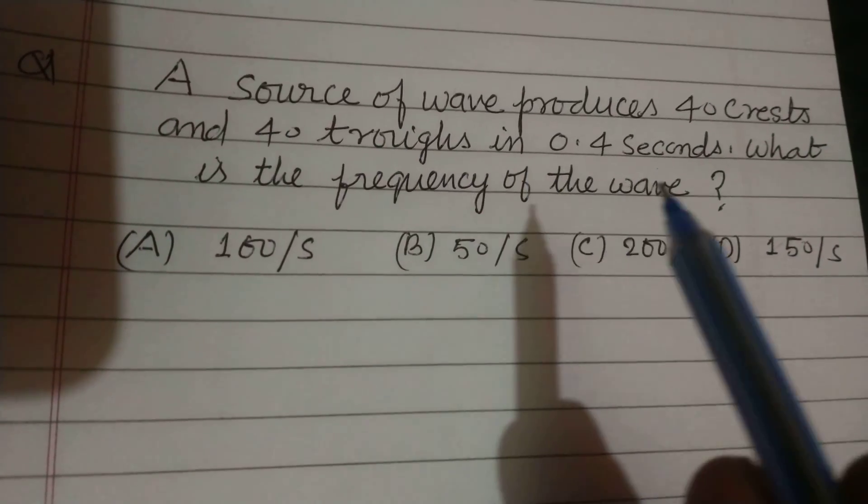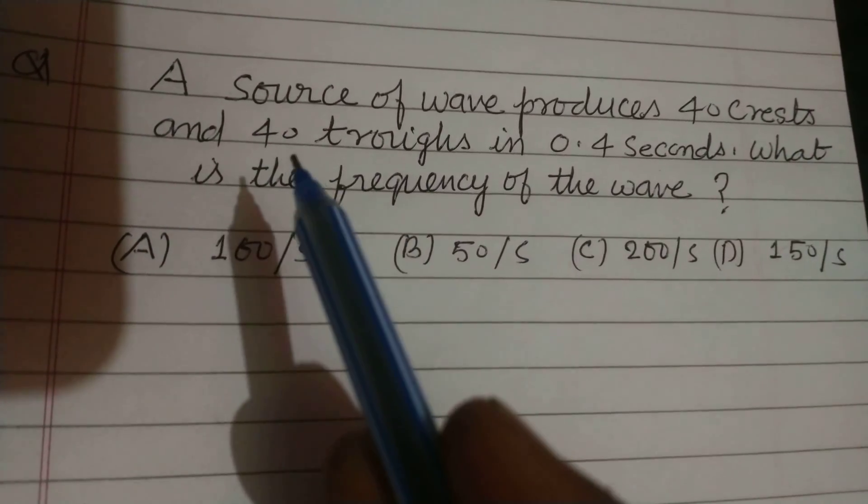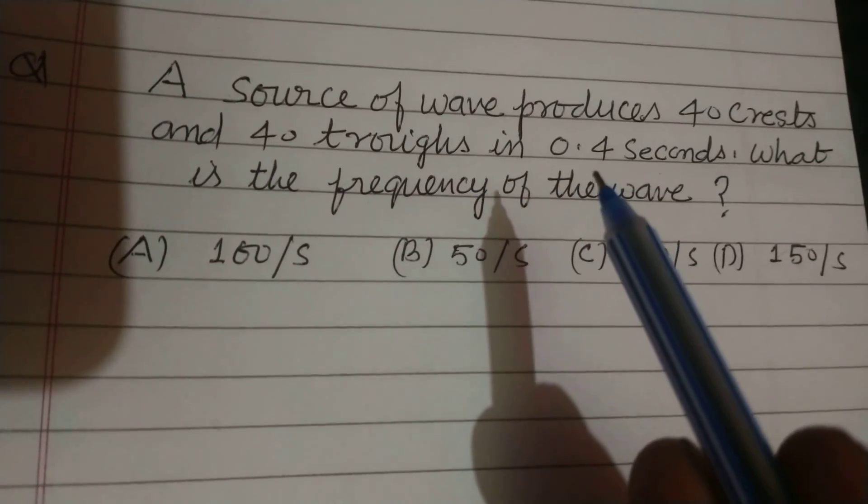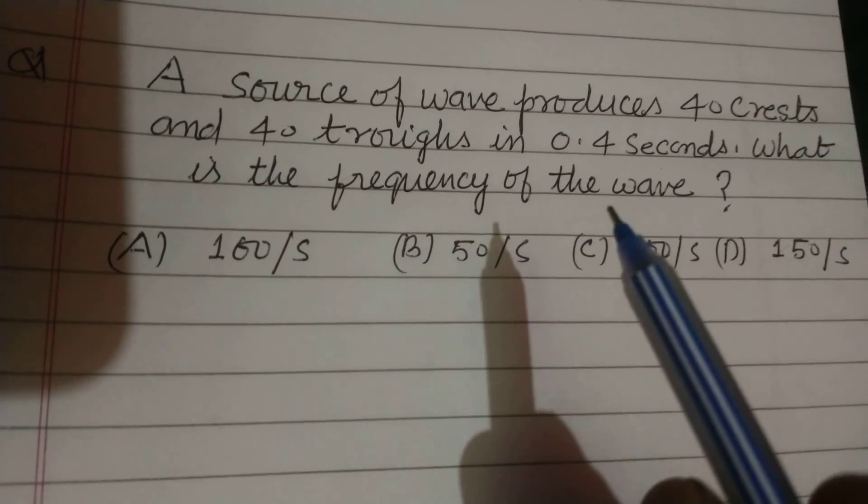A source of wave produces 40 crests and 40 troughs in 0.4 seconds. What is the frequency of the wave?